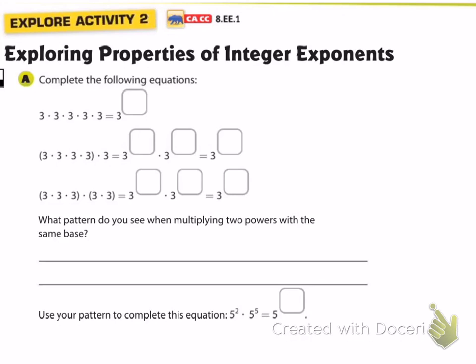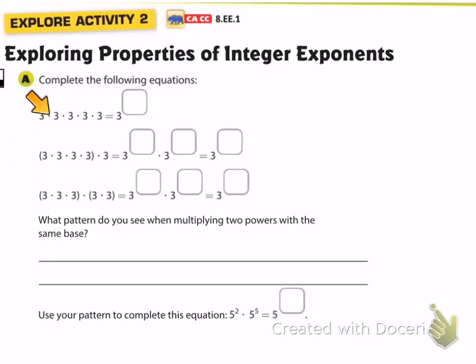Let's look at Part A. You could probably work through Part A by yourself all the way down to answering this question: what pattern do you see when multiplying two powers with the same base? What we're going to do is break this expression up in different ways — these three different ways. Look at that quickly and then I'll go over what I see in those patterns.